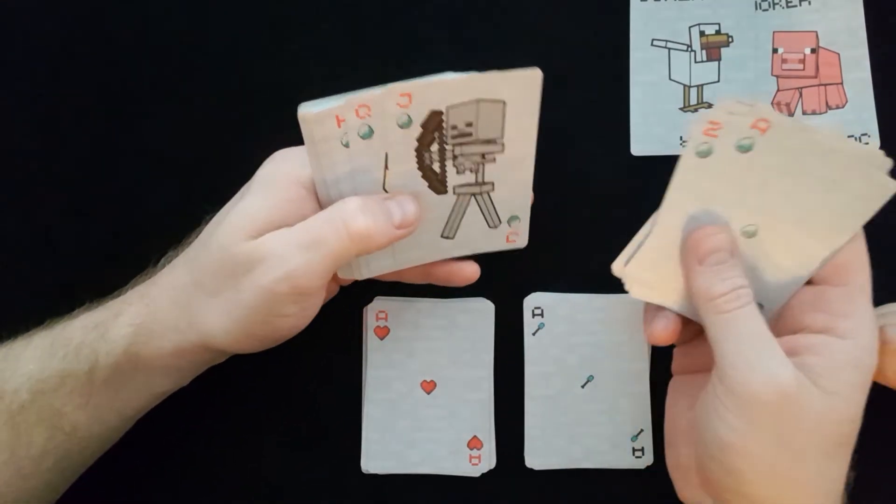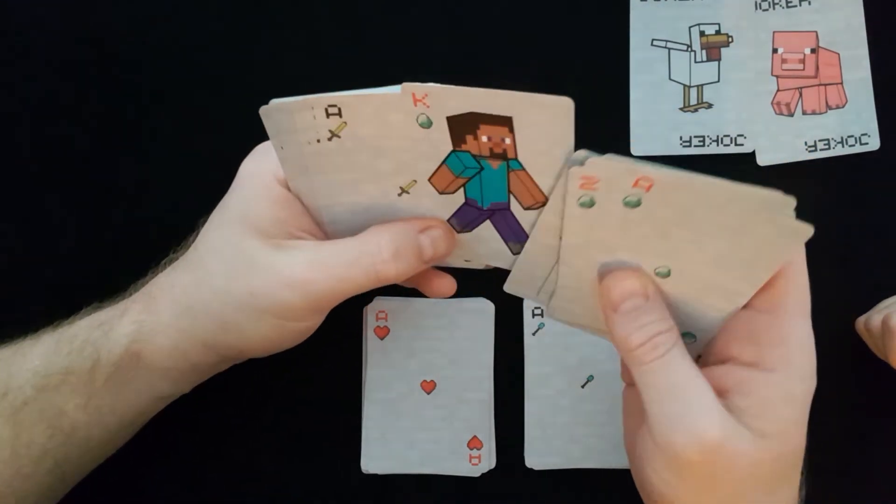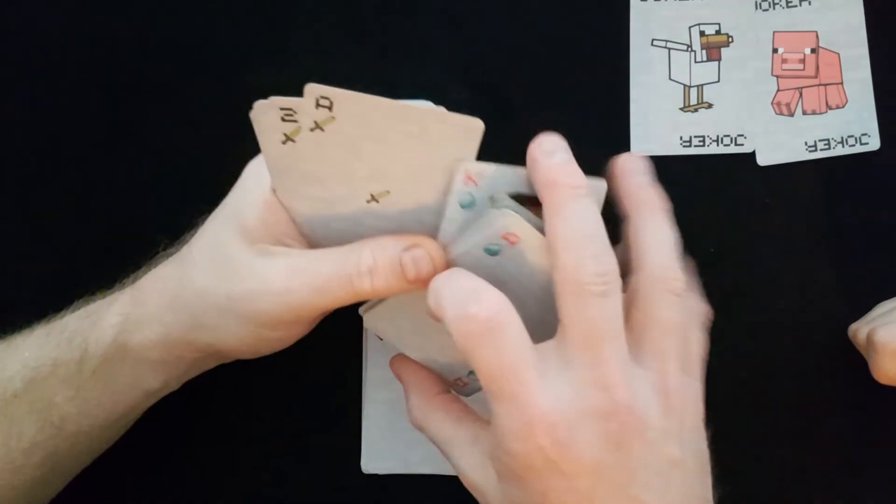And then what we've got here. What's this one? It's a skeleton. Skeleton. Alex and Steve. And then that's the diamonds. And then so we've got hearts. I think that's spades and diamonds.